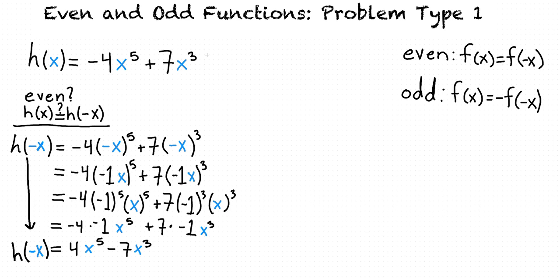Since h(-x) is not equal to h(x), we know that this function is not even. To find out if h is an odd function, we need to check if h(x) equals negative h(-x). We found before that h(-x) equals negative 4x to the fifth minus 7x cubed.